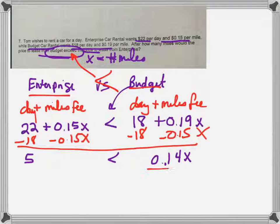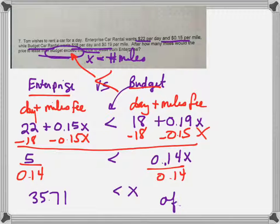And then finally I need to divide both sides by 0.14, which is positive so it doesn't switch the inequality. And that will give me 35.71 is less than x. Or in other words, x has to be greater than 35.71.